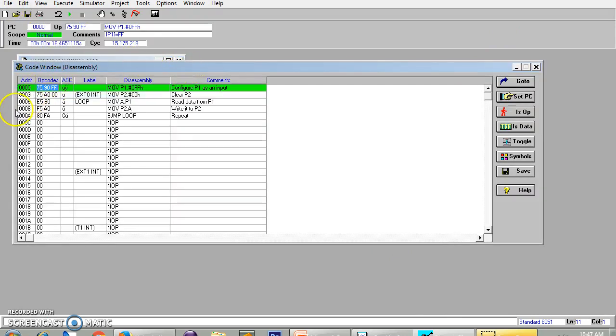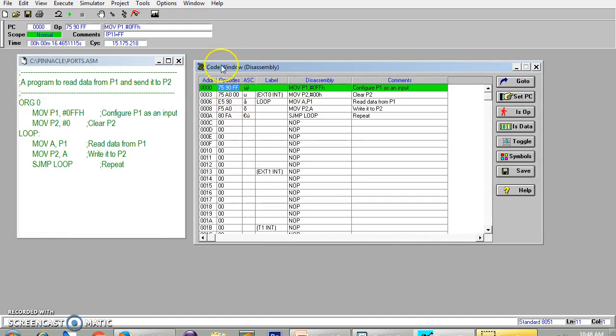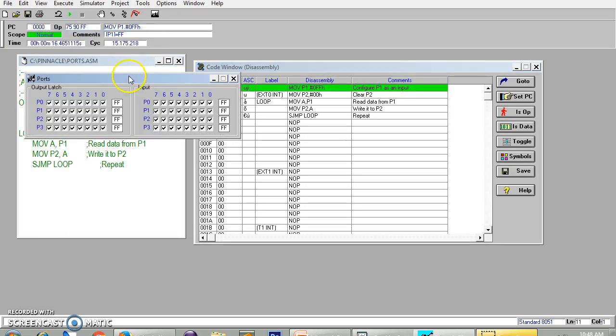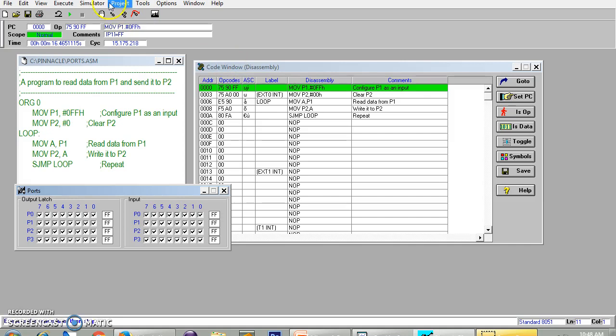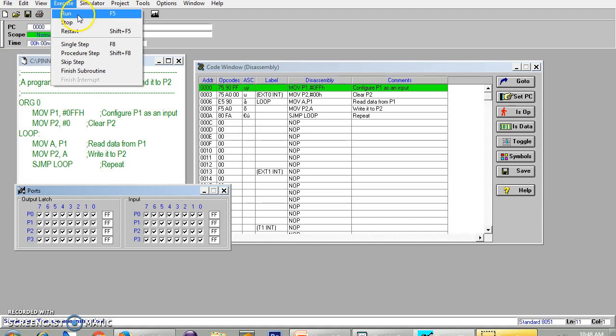We can get these windows from this view bar. So core memory window is there. Core memory window shows our code along with its opcodes. And the ports window will show the input and output states of the ports.